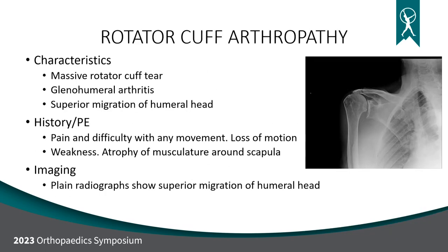What happens if everything goes wrong — missed diagnosis, tear progression, or repair failure? You get rotator cuff arthropathy. The rotator cuff no longer sits above the humerus, allowing it to ride up. This is usually a sign of a massive tear — you develop arthritis and superior migration of the humeral head, where the ball is no longer aligned with the glenoid. Symptoms include pain, weakness, loss of motion, and atrophy of the rotator cuff muscles on the scapula. Plain radiographs are all we need to diagnose it; MRI is used for pre-surgical planning but not required to establish the diagnosis.